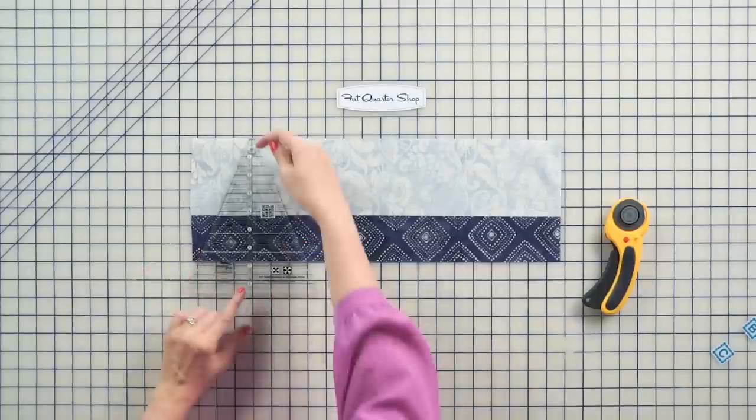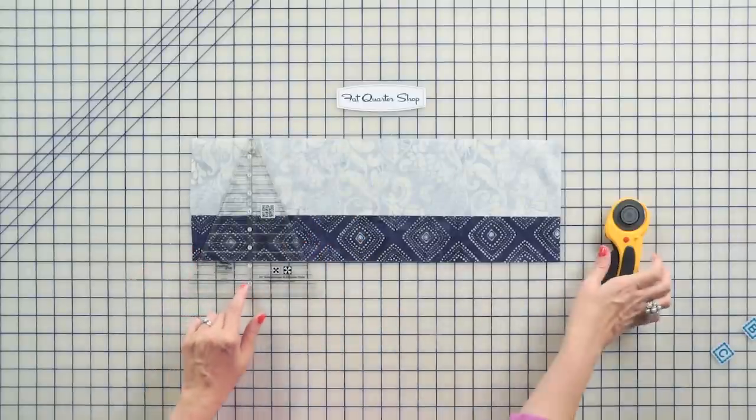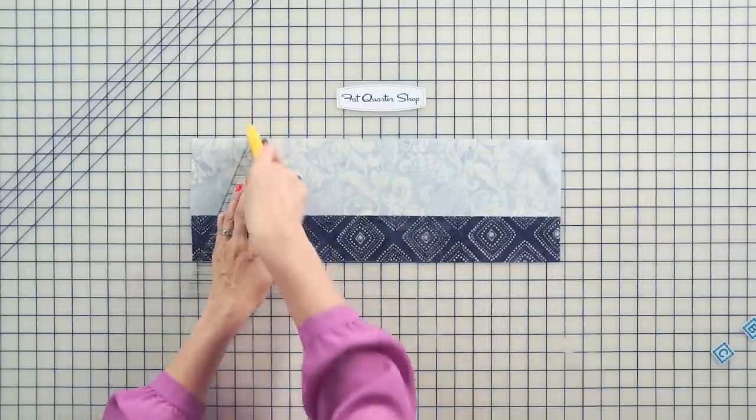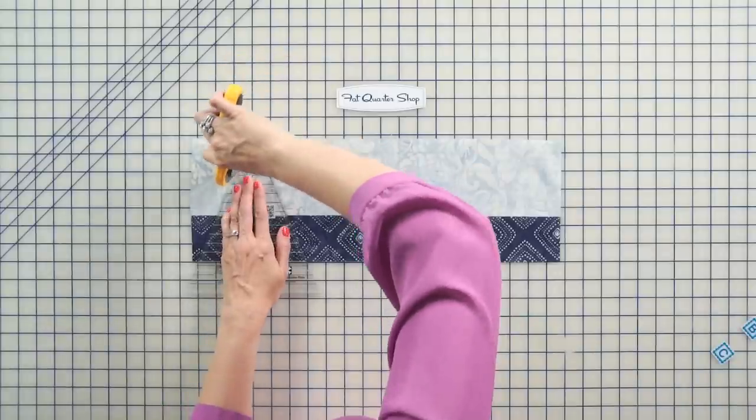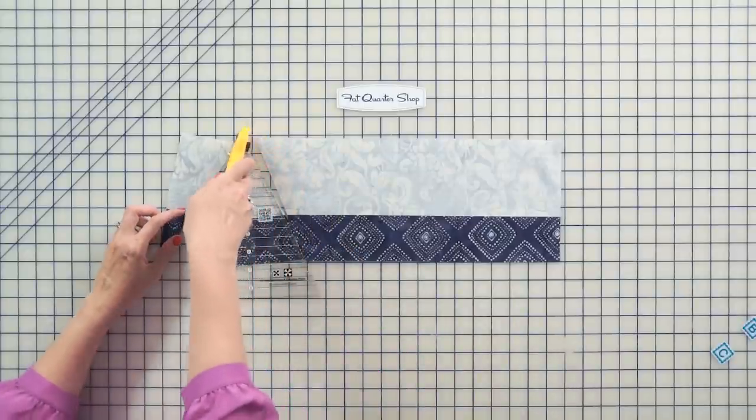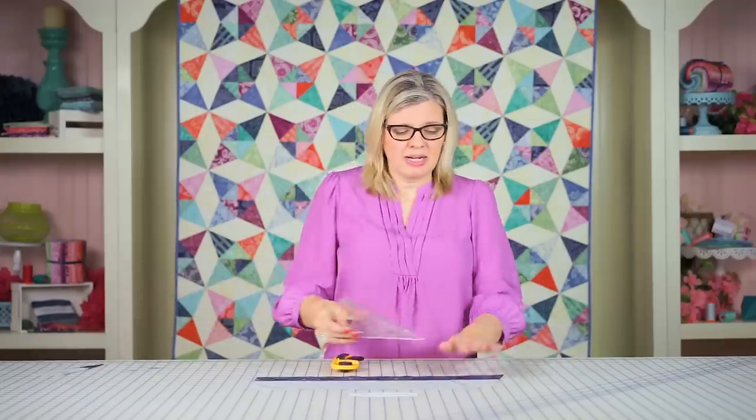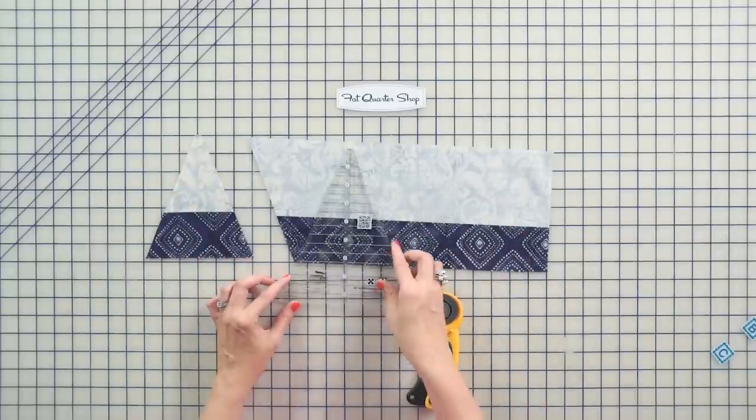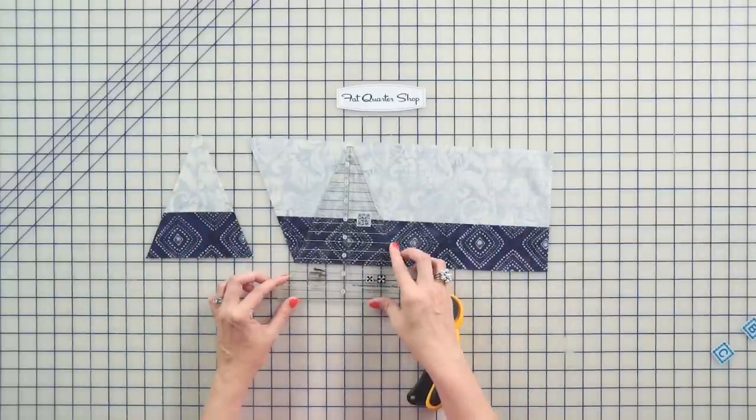Then you're gonna take your kaleidoscope Creative Grids ruler. You're gonna line the tip up at the top. We're gonna cut. Now, I cut towards myself. A lot of people don't like to do that, so if you're not comfortable, definitely don't do it. I've just been quilting a long time and I'm comfortable with it, but you should always keep your blade closed. This is going to be an extra little piece. We're gonna discard this, but we're gonna keep this triangle and we're gonna make more.